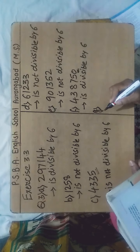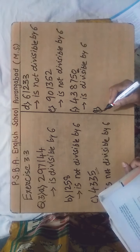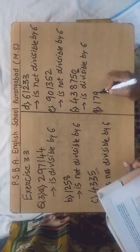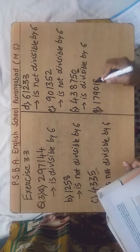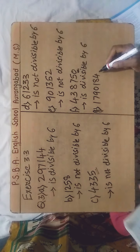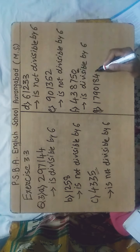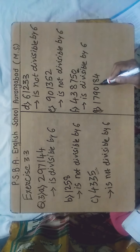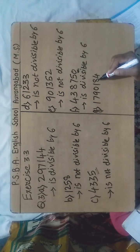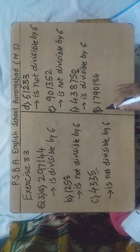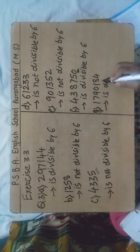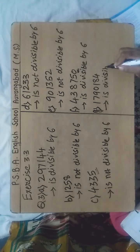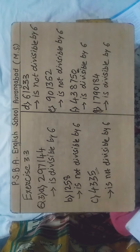Sub-question G: the number is 11,79,184. It is having 4 at its ones place, therefore it is divisible by 2. The sum of digits: 1+1+7+9+1+8+4 = 31... coming to 30, which is divisible by 3. Therefore the above number is divisible by 6.